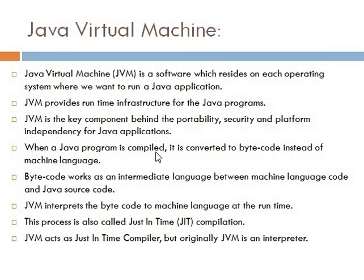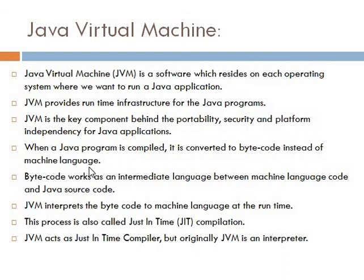When a Java program is compiled, it is first converted into bytecode instead of machine language. Compilation means checking for errors and converting a high-level language source code into a machine language code. Since the Java program is a high-level language code, it has to be converted finally into machine language so that it is easily understandable by the computer, because the computer understands only machine language in the form of zeros and ones.